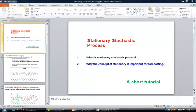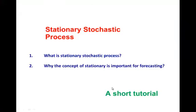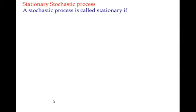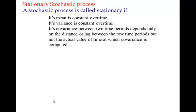In this video we are going to learn about the stochastic process — specifically, what is a stationary stochastic process and why the concept of stationarity is important for forecasting. A stochastic process is called stationary if its mean is constant over time, its variance is constant over time, and the covariance between two different time periods depends only on the distance between them, not on when exactly they are measured.